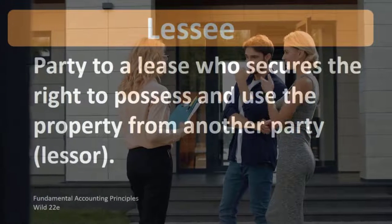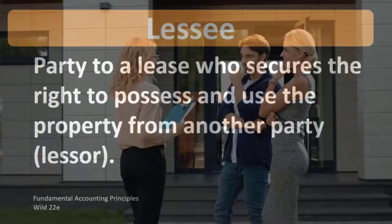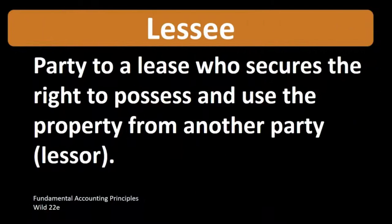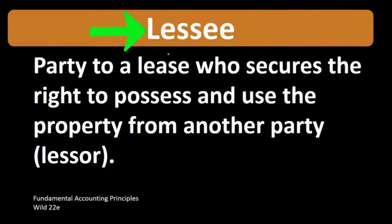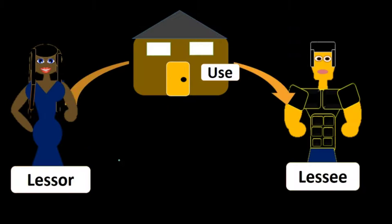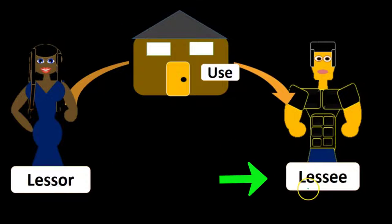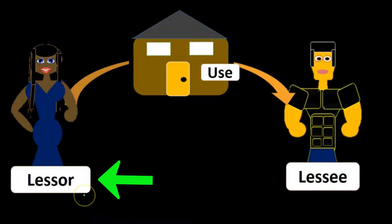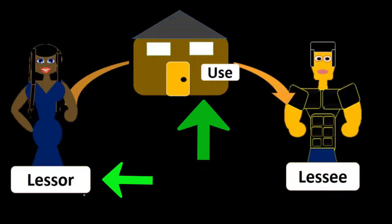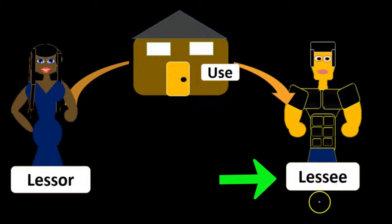So we're talking about a piece of property that is going to be leased from one party to the other. We need to keep these two terms distinct from each other — the lessee versus the lessor. If we're looking at a transaction, we have the lessor on the left-hand side, here is our piece of property, and we have the lessee on the right-hand side. The lessor is the one that owns the property and is renting the use of that property to the lessee.